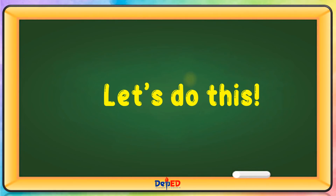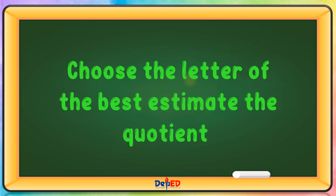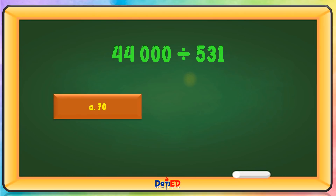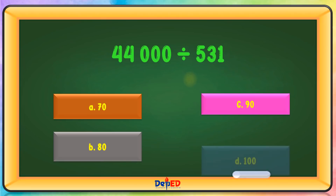Let's do this. Choose the letter of the best estimate of the quotient. 44,000 divided by 531. A. 70, B. 80, C. 90, or D. 100. The correct answer is B.